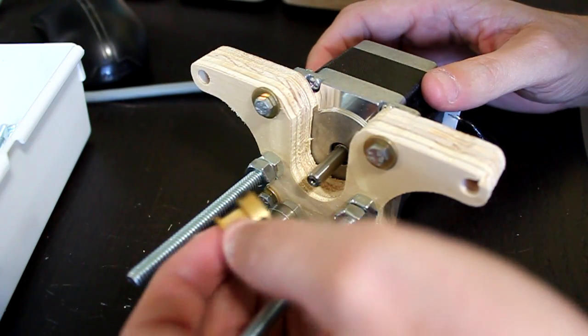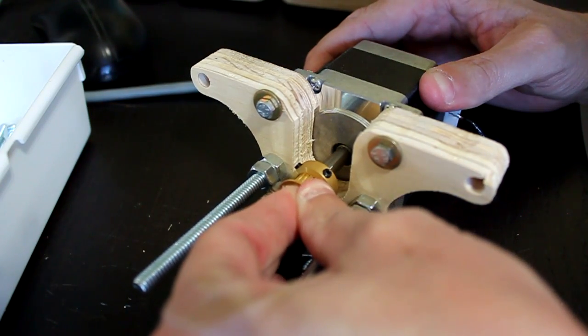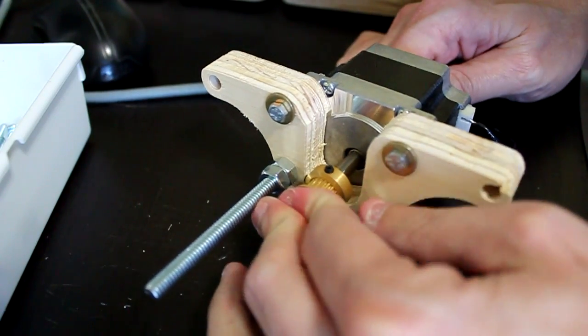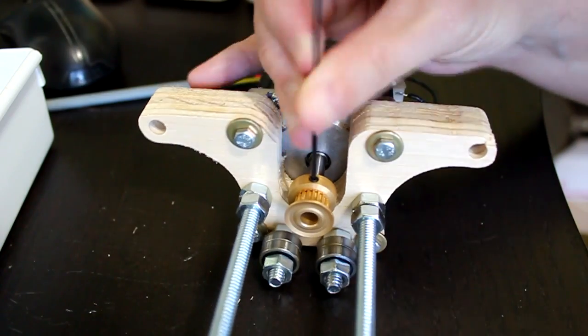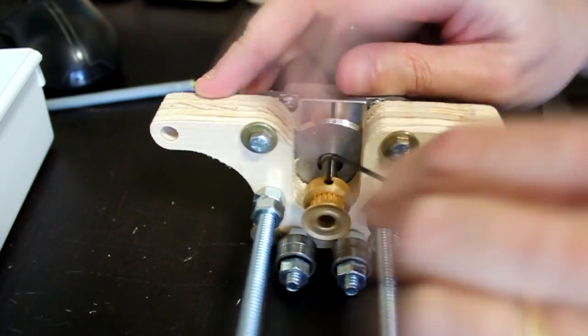Now the timing belt pulley needs to be fastened to the motor shaft. Align the pulley onto the shaft so that it aligns with the idler bearings. Once the pulley is aligned you can tighten the set screw with an Allen wrench.